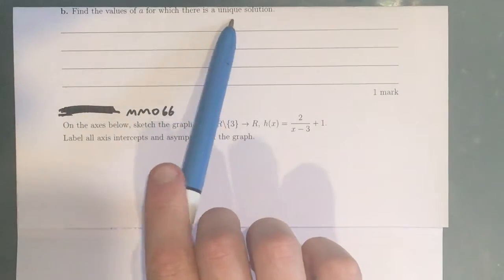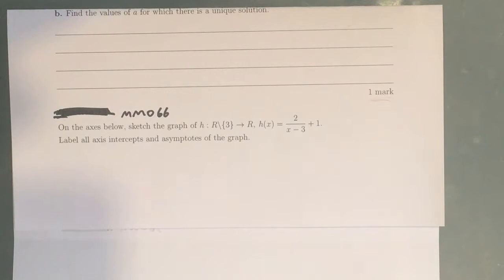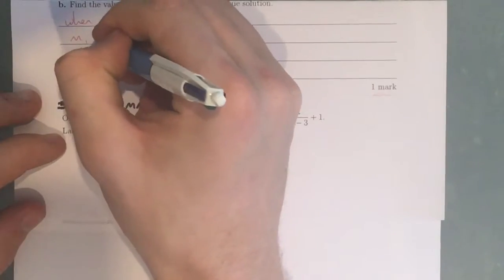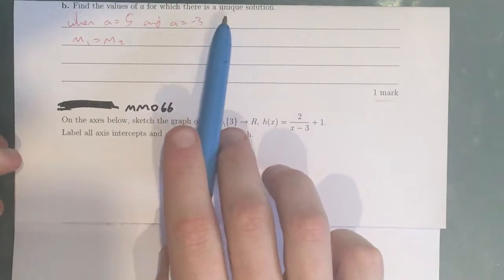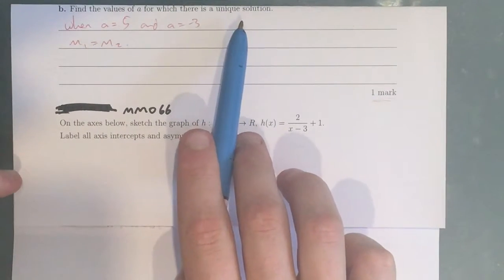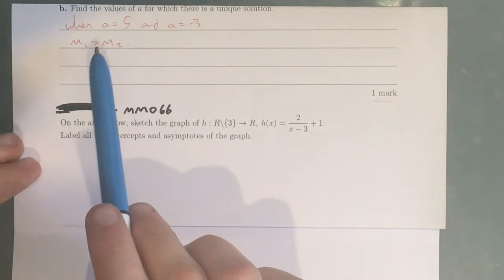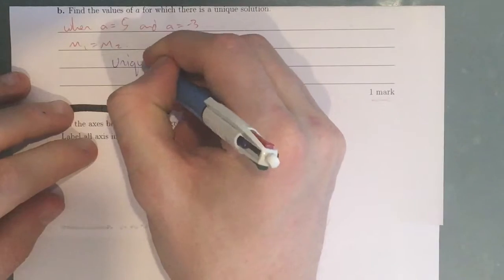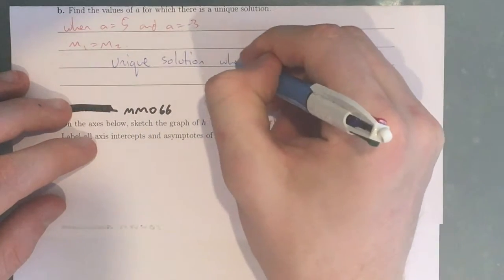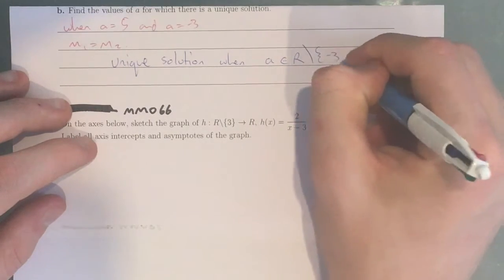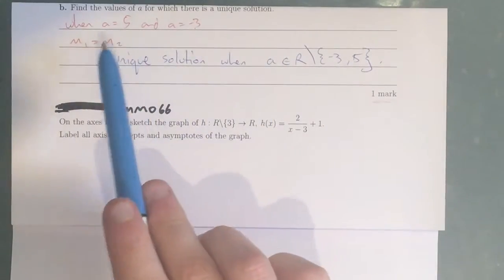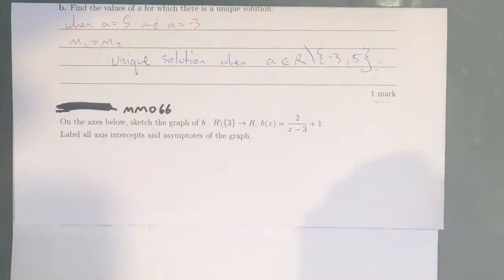We're trying to find the values of A for which there is a unique solution, and it's only one mark. We know that when A equals 5 and A equals negative 3, the two gradients equal each other. But when we want a unique solution, we want one point of intersection, and that only occurs when the gradients are different. So whenever A is anything but 5 and negative 3, there's a unique solution. The answer is: unique solution when A is an element of R, not including negative 3 or 5. This gives us our one mark.